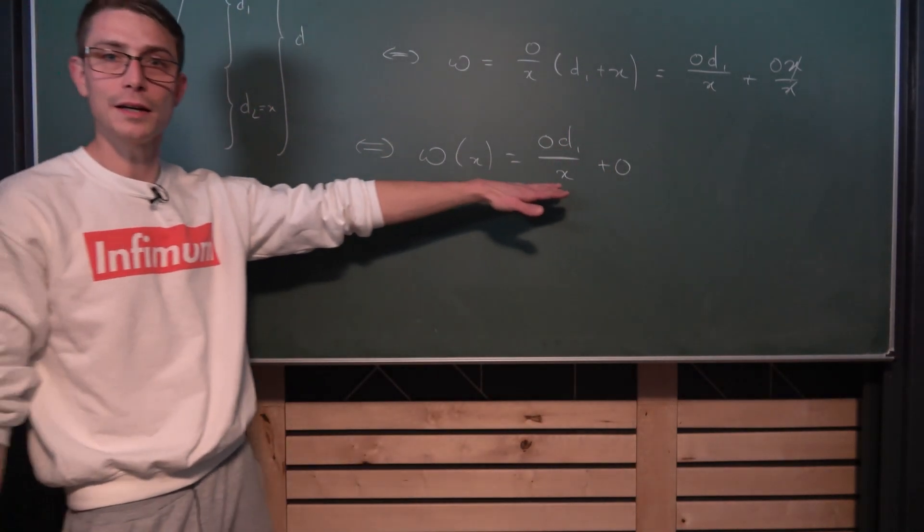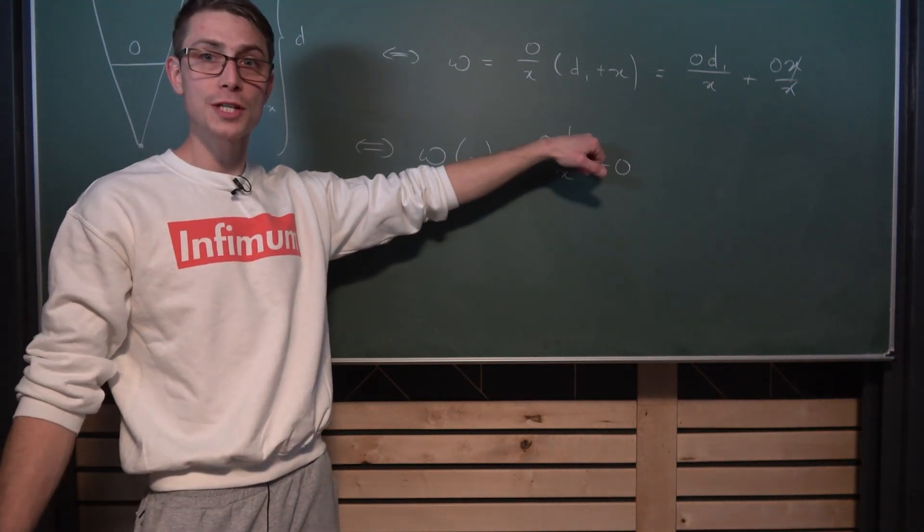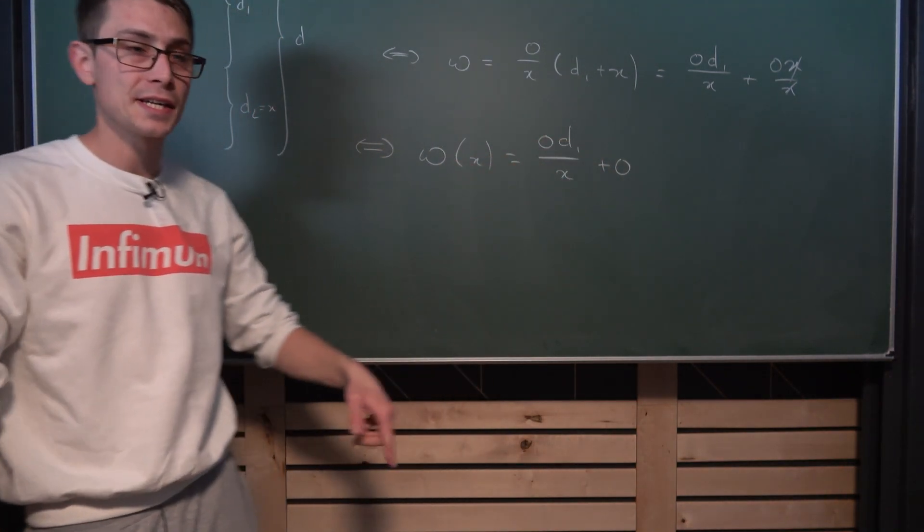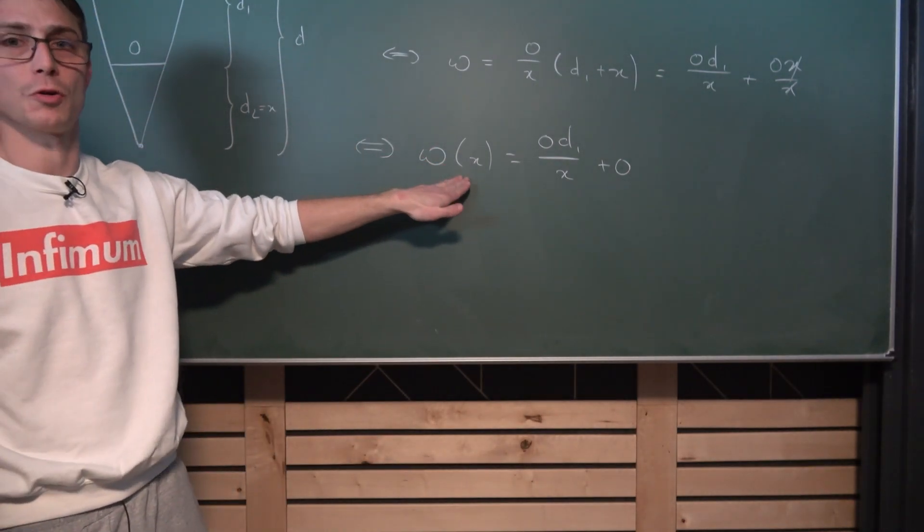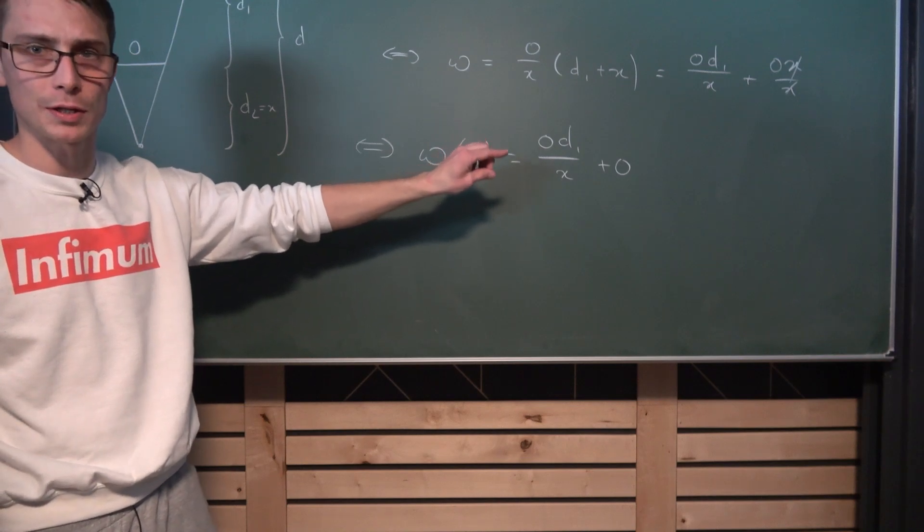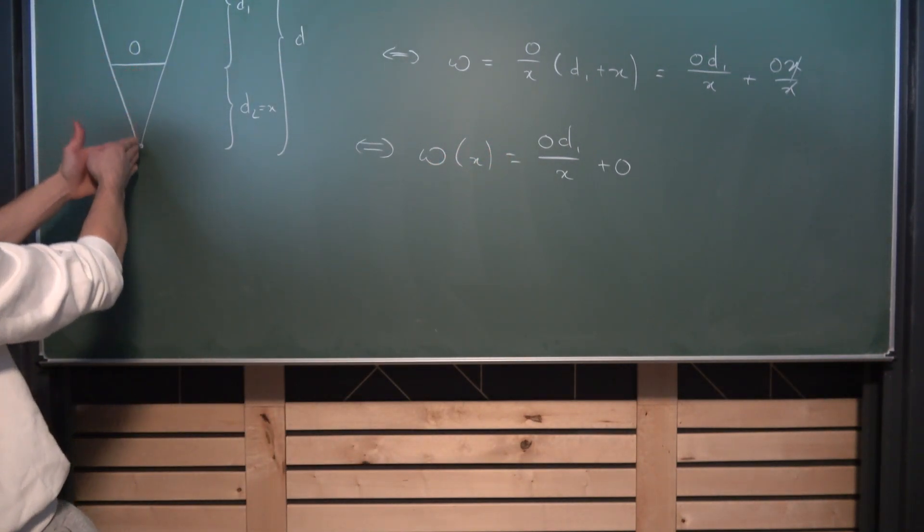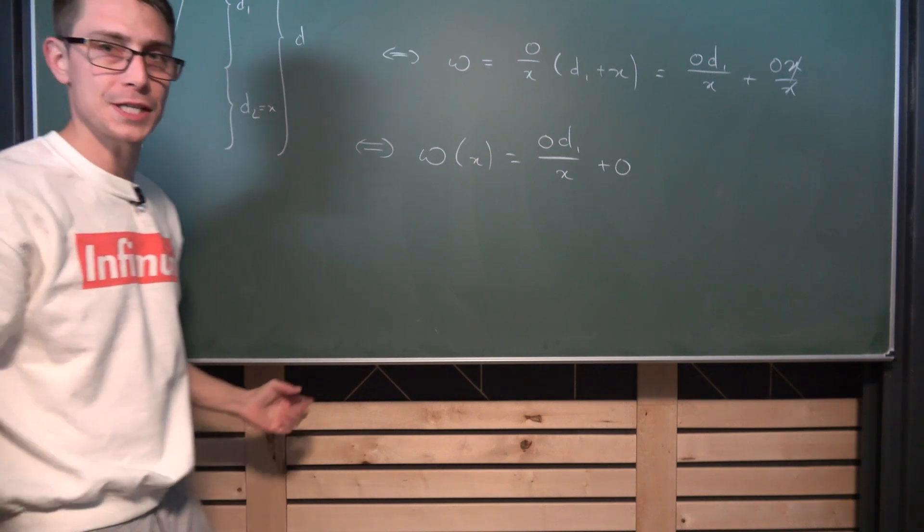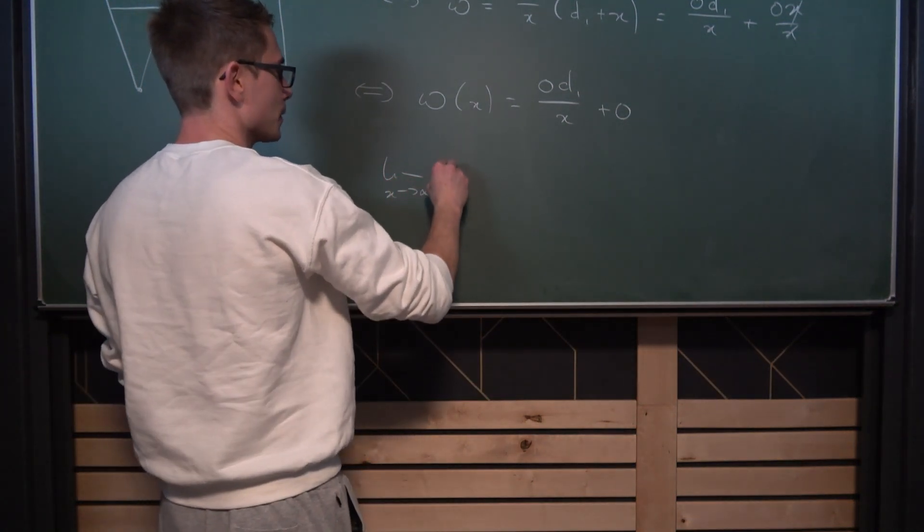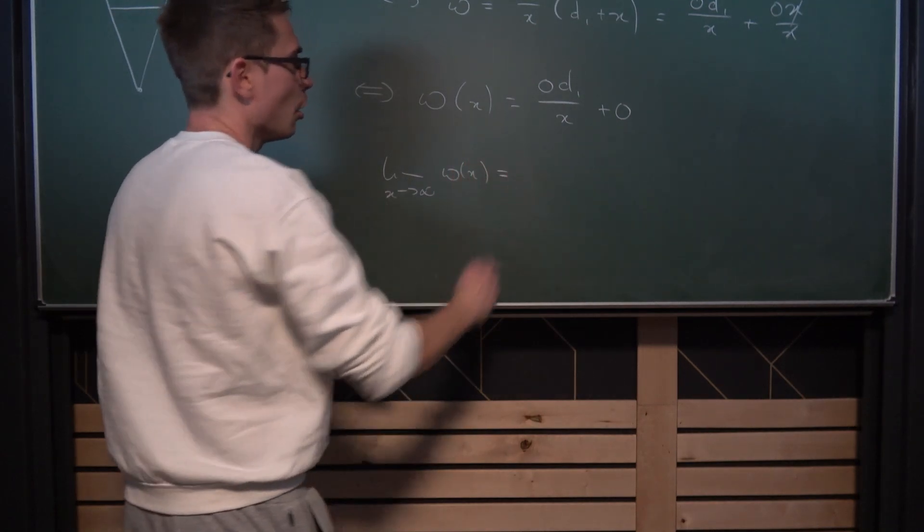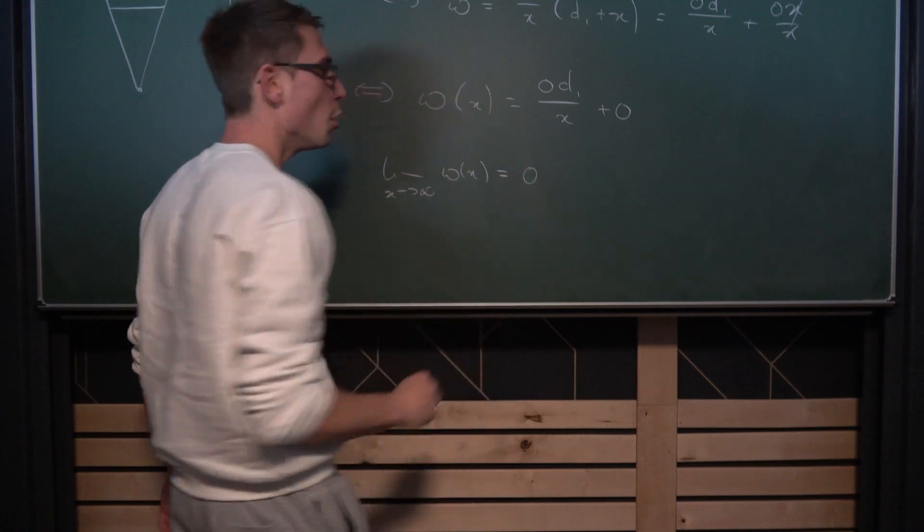Obviously it behaves proportionally to 1 over x. Now what happens if the limit of the function goes to infinity, so x going to infinity. That means what happens if our light source is farther and farther away from our object. Now in the limit as x approaches infinity of W of x, obviously this term is going to go to zero. Meaning we are going to get O overall.